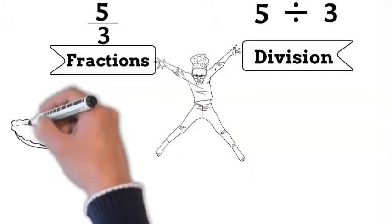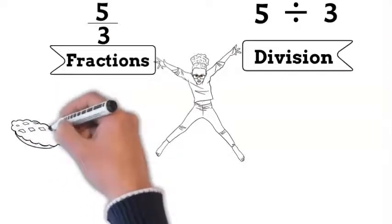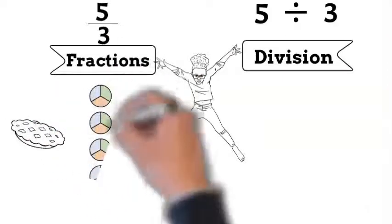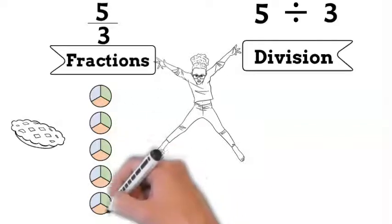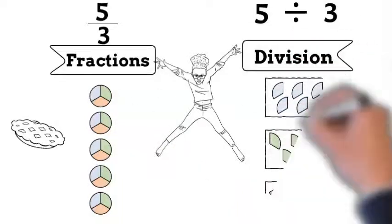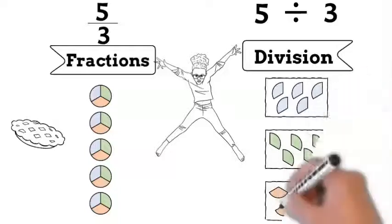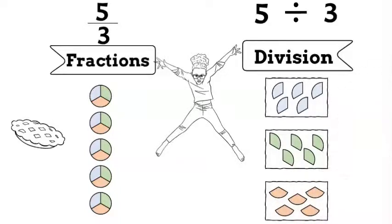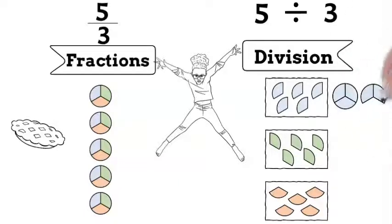Let's think for a minute. Consider how to share 5 pies equally among 3 people. If you divide 5 pies equally among the 3 people, each of the pies should contribute 1 third of itself to each person. Therefore, each person gets 5 pieces, each of which is 1 third of a pie.